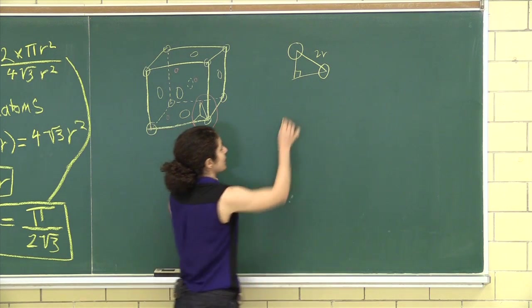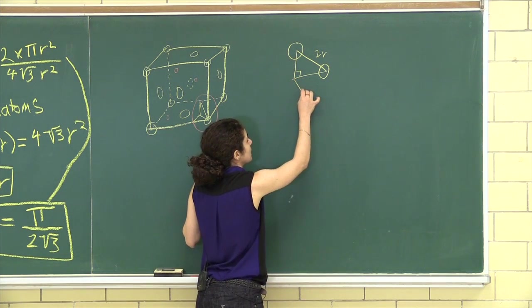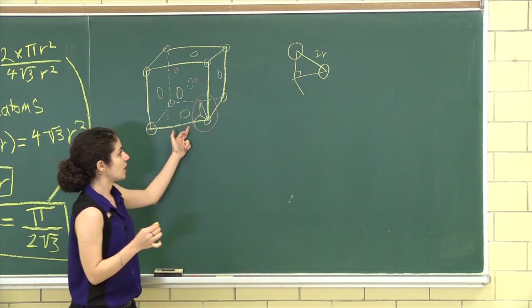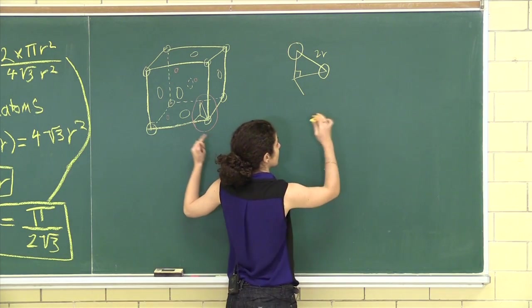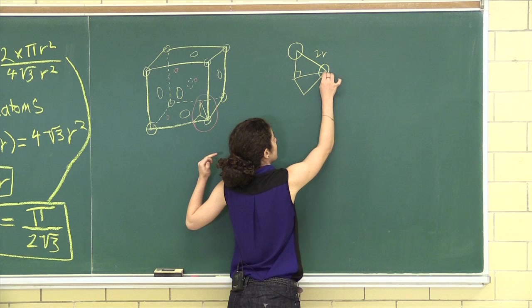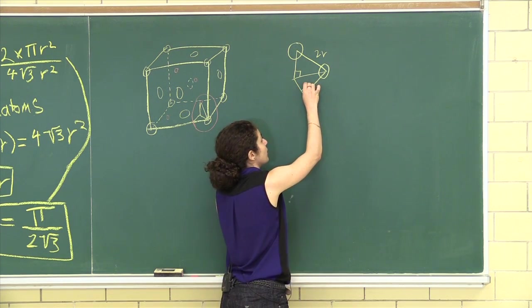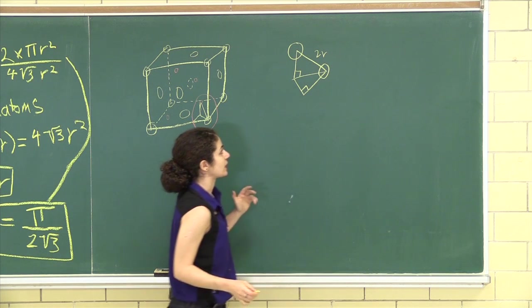But what's happening here is that as you go out onto the edge of the structure, you get a triangle that looks like this, where the right angle is over here.